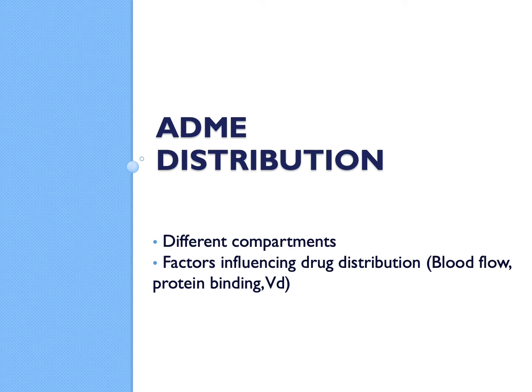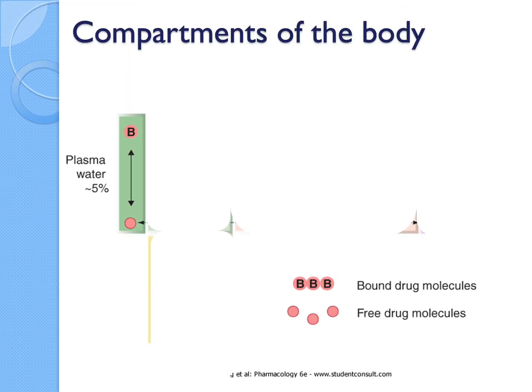Hello everyone, it's Yuan again. For this particular section we will be talking about the D part of pharmacokinetics, namely the distribution. We'll go through the names of the different compartments whereby the drug can go and diffuse around, and also the factors that influence drug distribution.